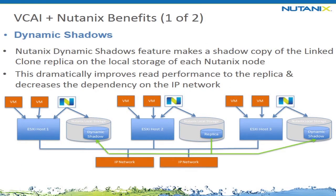Looking at VCAI and Nutanix, there are a couple of really good benefits to highlight. The first is what we call dynamic shadows. A dynamic shadow is when we create a copy of the replica file from one Nutanix node and distribute it around the Nutanix distributed file system. The idea is to dramatically improve read performance, because every linked clone always accesses that replica. This decreases the dependency on the IP network, which is a huge benefit.